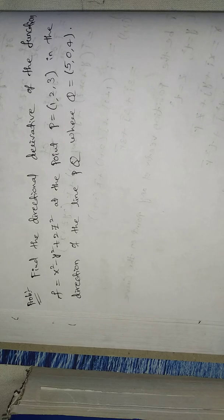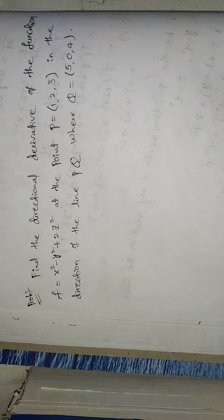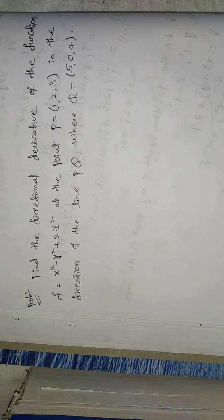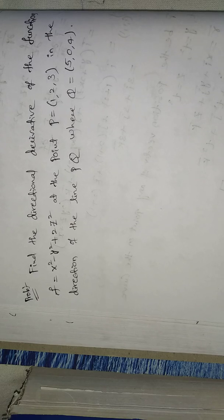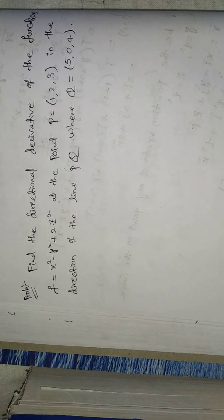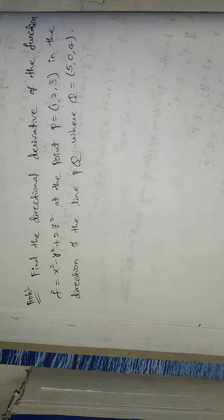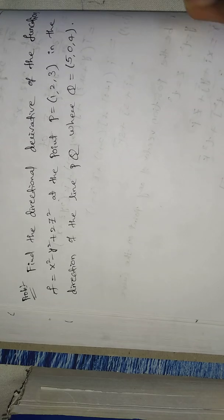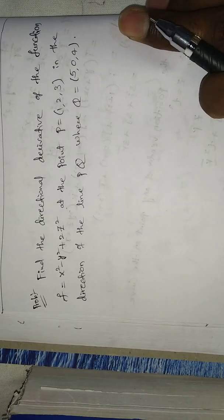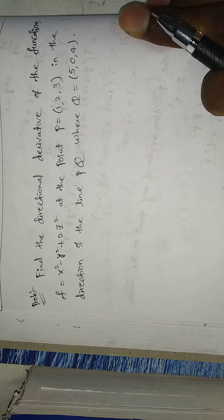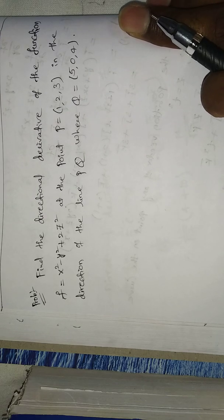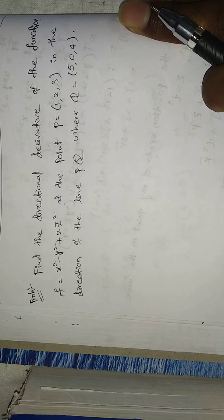Alright, welcome to Rajesh Lekaloo. Today our topic is a vector differentiation problem and a directional derivative problem. Find the directional derivative of the function f equals x squared minus y squared plus 2z squared at the point (1, 2, 3).